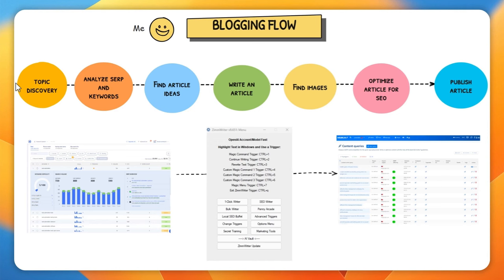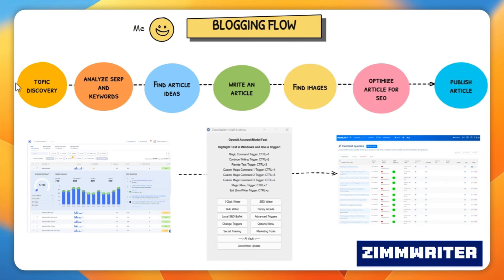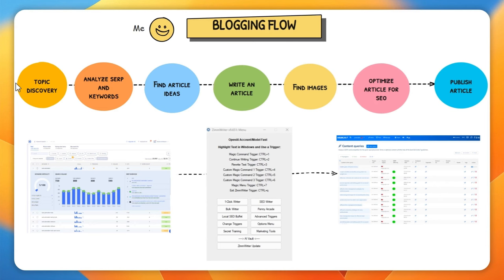I'll be showing you how to use the NeuronWriter API inside ActivePieces and do some automation with it. I'll show you how to use NeuronWriter to come up with different ideas for blog articles. It seems like I'm already late to the party, but I just learned that the NeuronWriter API has been released already, and it's a tool that I've been wanting to use more and more in my workflow for content generation.